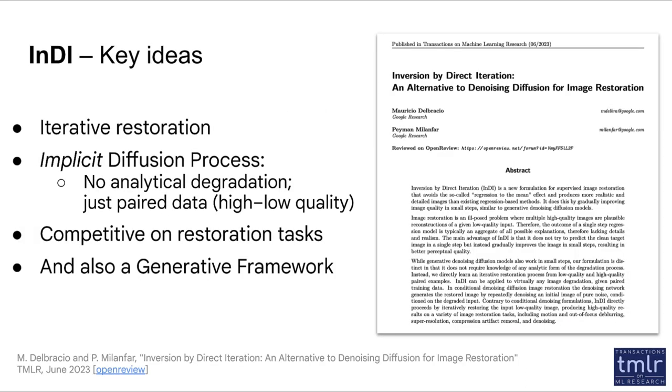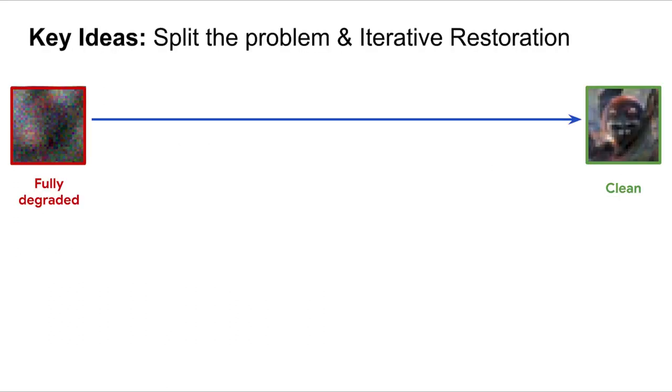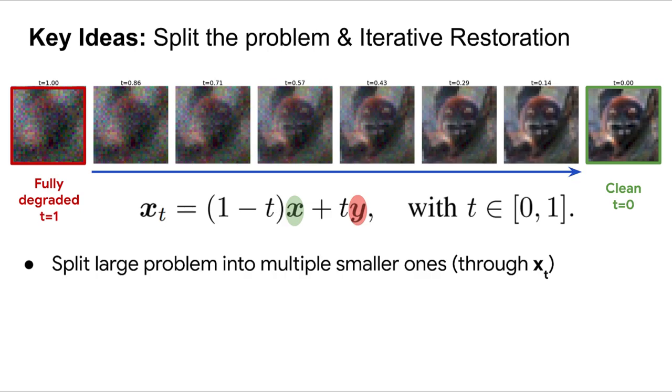We introduce INDI, an iterative procedure for doing image restoration and generation. INDI can be seen as an implicit reverse diffusion process that can be applied to any restoration task where we are given paired data for training the model. The key idea in INDI is to split the restoration process into multiple smaller ones. This is done by defining intermediate degradations, here represented by x_t, that are convex combinations of the low quality input y and high quality target x.